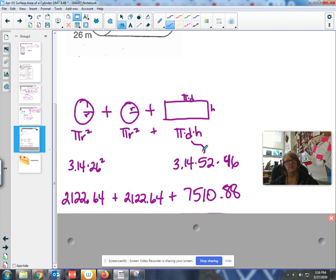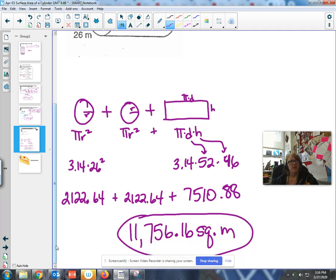The height is 46. Holy cow. Thank goodness for a calculator. Can you imagine trying to do all that by hand? Gross. I end up with a grand total here of 11,756 and 1,600 square meters. Hot diggity.